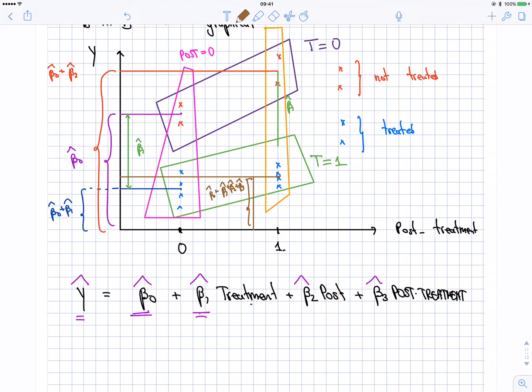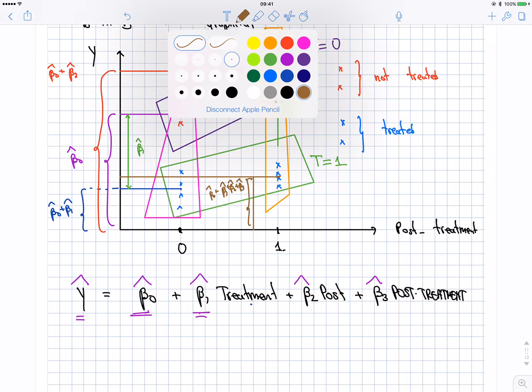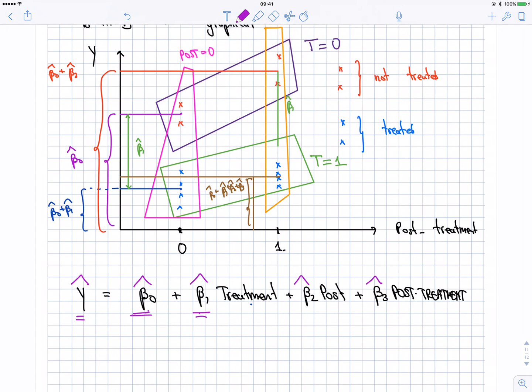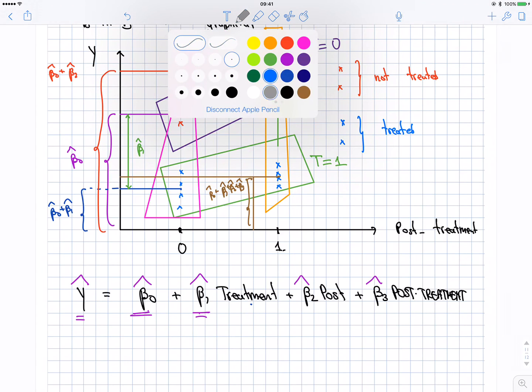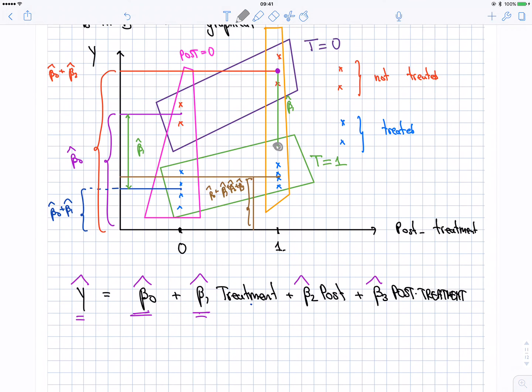So look. The difference between these two, if the parallel trend assumption holds, I know that the graph has become a little bit heavy, but if the difference were to hold, remember I took this beta one and I transposed it in gray. I should have expected, if the parallel trend assumption is valid, in the absence of treatment, this should have been the average outcome, if the parallel trend holds. So average, average outcome, in the absence of treatment.